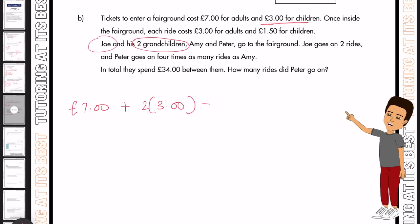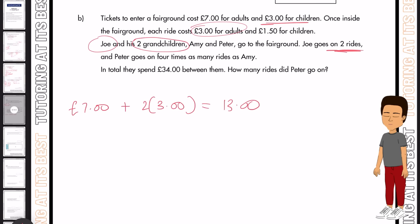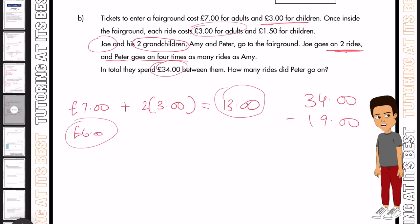So remember, it's £3 each for each ride. He goes on two rides, so that's £6 here for Joe. And Peter goes on four times as many rides as Amy. And if the total spend is £34 between them, how many rides did Peter go on? So instantly, we've got £13 and £6, that's £19. So if we have £34 minus £19, what do we get here? We get £15.